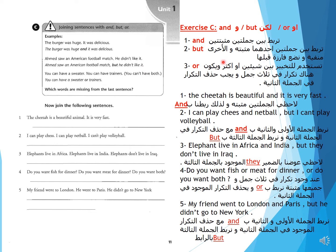I will show you a little bit about the connectors. 'And' تربط بين جملتين مثبتتين. 'But' تربط بين جملتين أحدهما مثبتة والأخرى منفية، ونضع فارزة قبلها. 'Or' تستخدم للتخيير بين شيئين أو أكثر، ويجب حذف التكرار في الجملة الثانية.